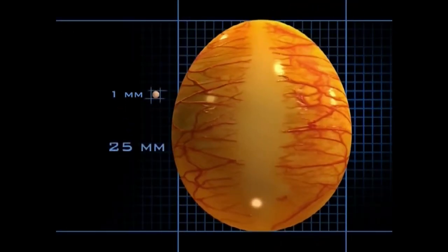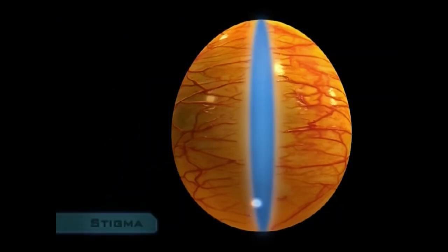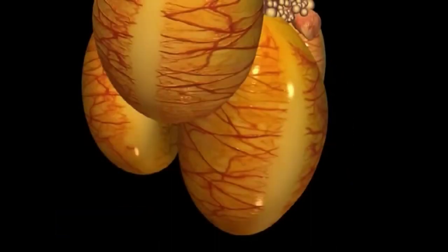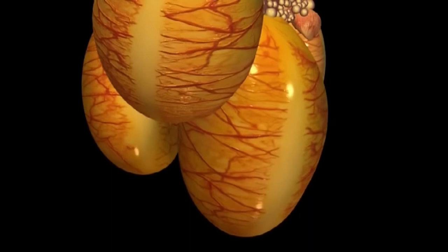In one to two weeks, a follicle grows from less than one millimeter in diameter, to the mature size of 25 millimeters. When a yolk matures, the follicle ruptures along a line relatively free from blood vessels, the stigma, and the yolk is released.